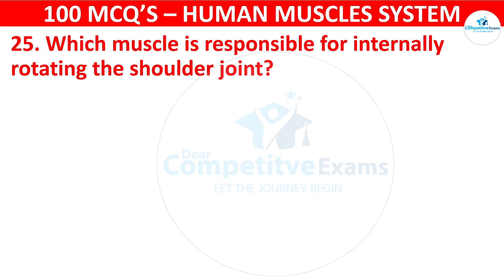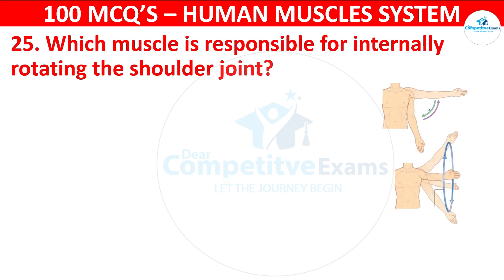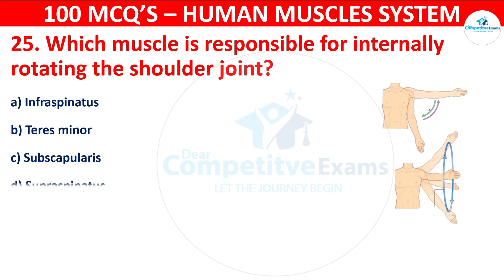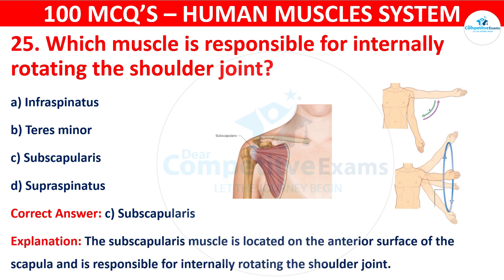Question number twenty-five: Which muscle is responsible for internally rotating the shoulder joint? Your options are: Infraspinatus, Teres minor, Subscapularis, or Supraspinatus. The correct answer is C, that is subscapularis. The subscapularis muscle is located on the anterior surface of the scapula and is responsible for internally rotating the shoulder joint.